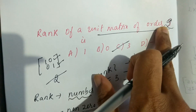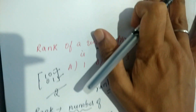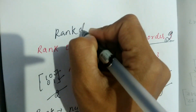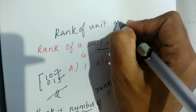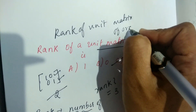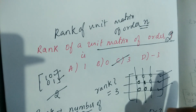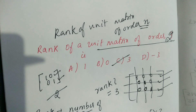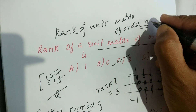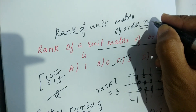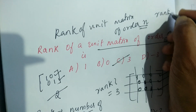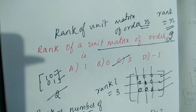In general, the rank of a unit matrix of order n is equal to n. So for order 3, the rank is 3, which means option C is correct.